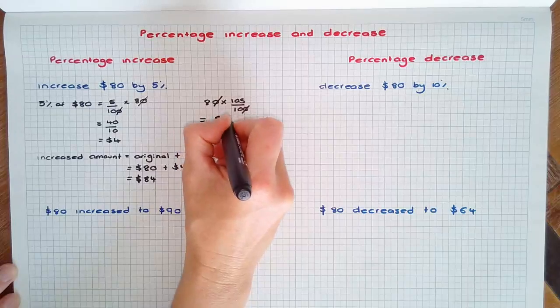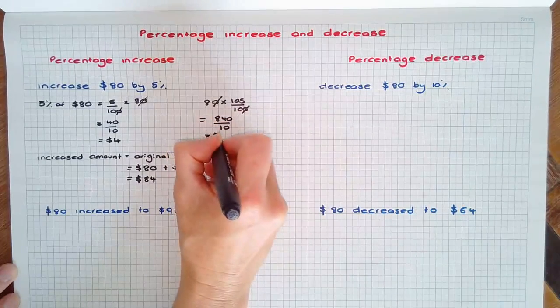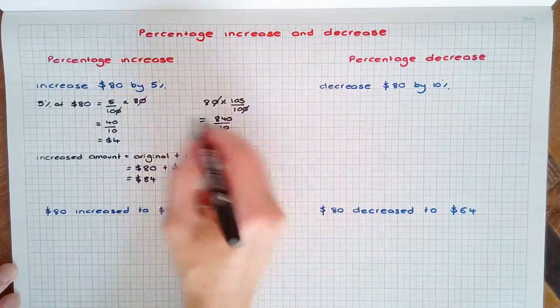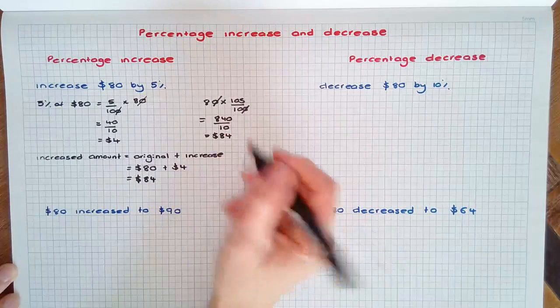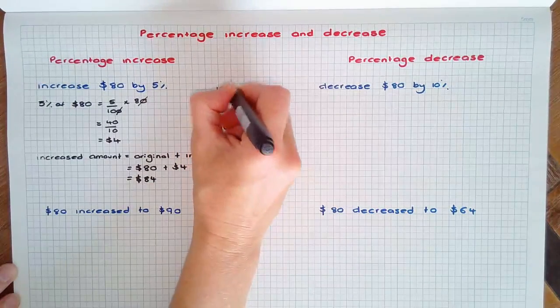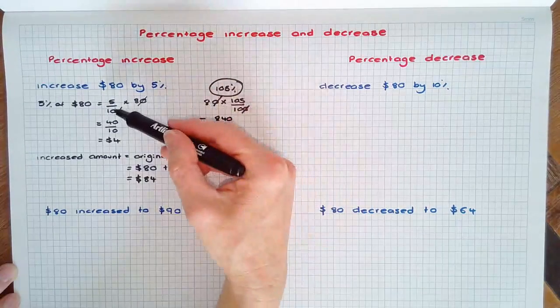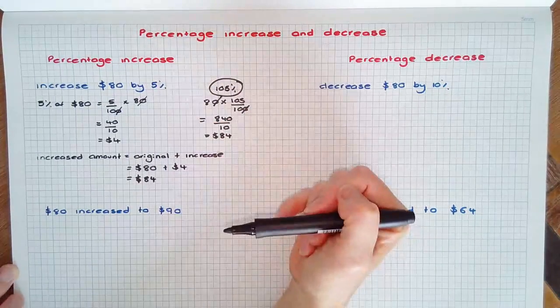840 over 10 which is the $84, which is the same result. So this was increasing or multiplying by 105% rather than finding the 5% and adding on to the original.